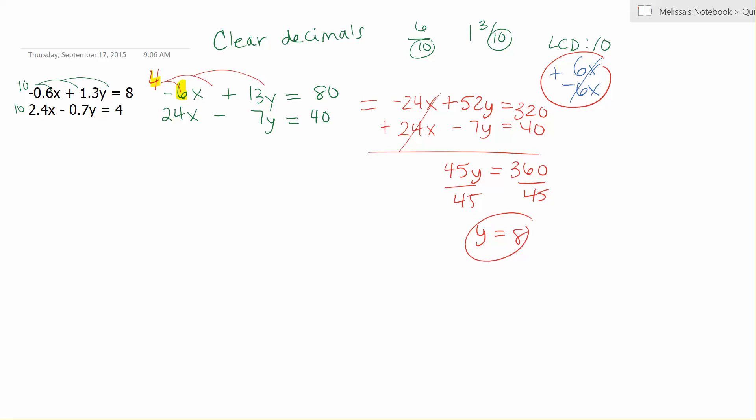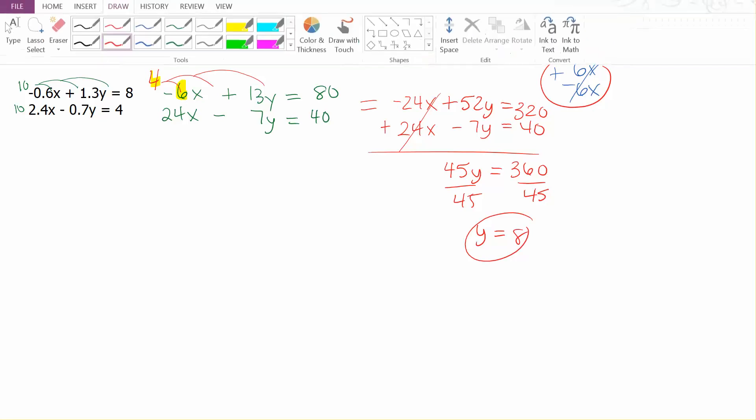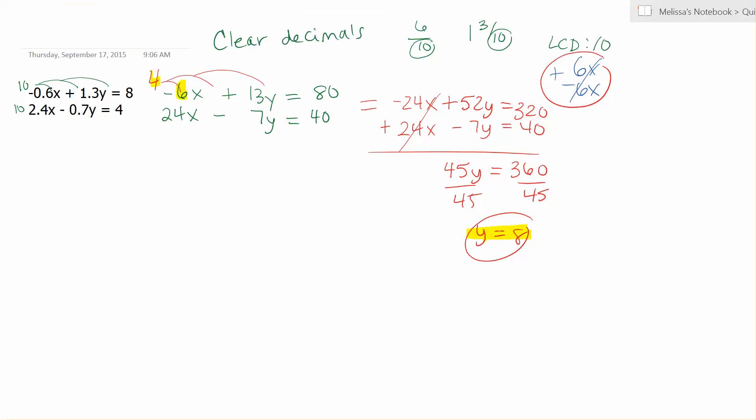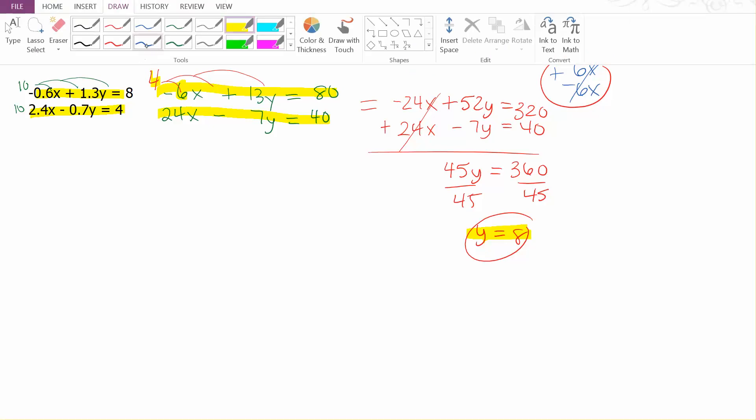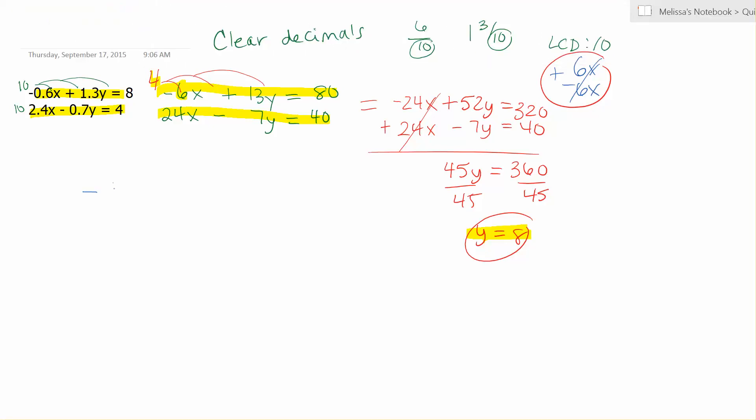Now we need to find x. Plug in your answer for y, which is 8. You can plug it into the equations you changed or go back to the original. I'm going to use the first equation. Negative 0.6x plus 1.3y equals 8, and I know y is 8.